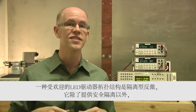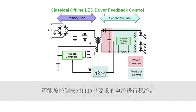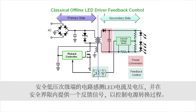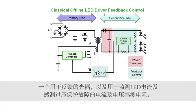A popular LED driver topology is the isolated flyback, which, besides providing safety isolation, also does all the control to regulate the required current for the LED string. Circuitry on the safe low-voltage secondary side senses the current and voltage of the LEDs and provides a feedback signal across the isolation boundary to control the power conversion process. The secondary side components include biasing circuitry, a dual op amp, a precision reference, and an optocoupler for feedback, along with current and voltage sensing resistors to monitor the LED current and sense if there is an over-voltage fault.